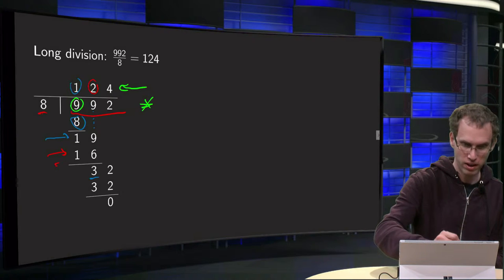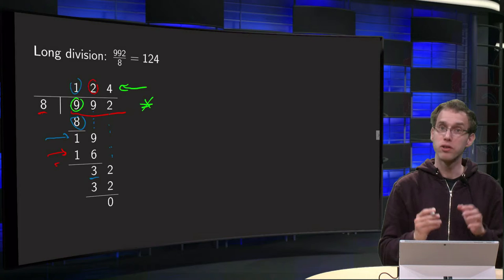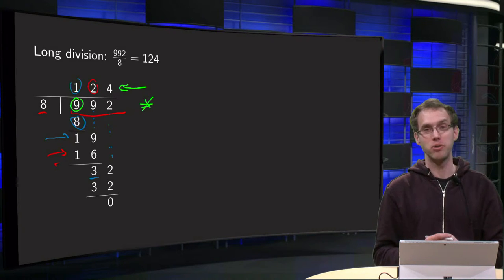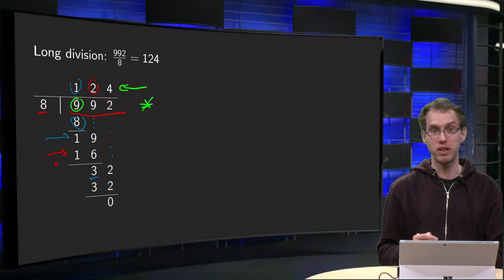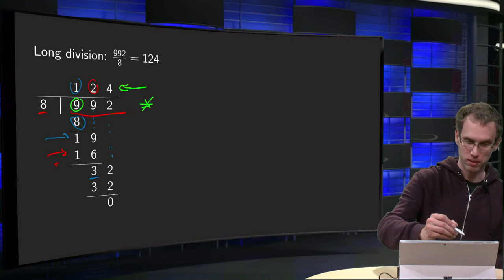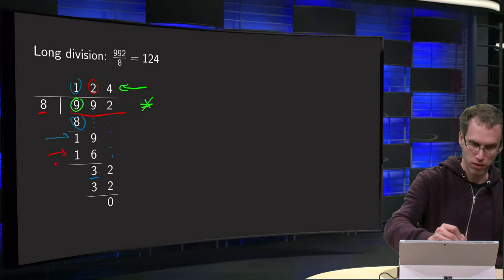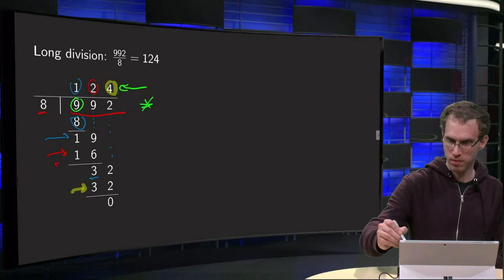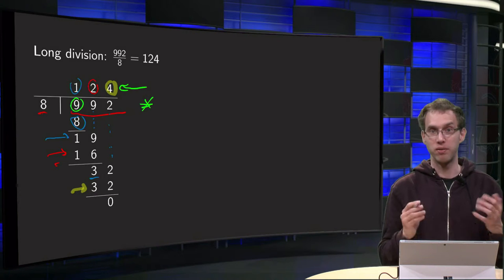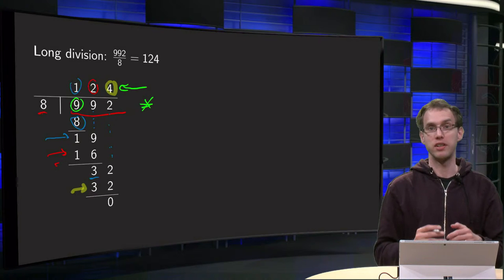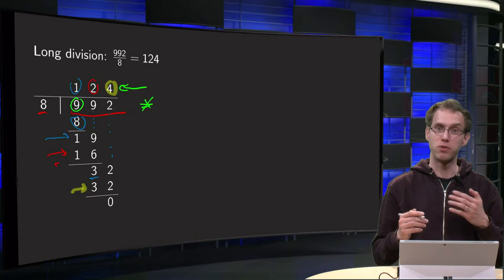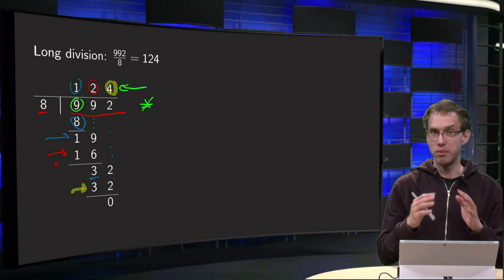So you have the 3 over here, and then we bring down the 2, giving 32. How many times can you get 8 into 32? That's 4 times, because 4 times 8 equals 32. So we get a 4 over here and 32 over there, and we subtract and get 0 as a remainder. So our result is 992 divided by 8 equals 124, with a remainder of 0.